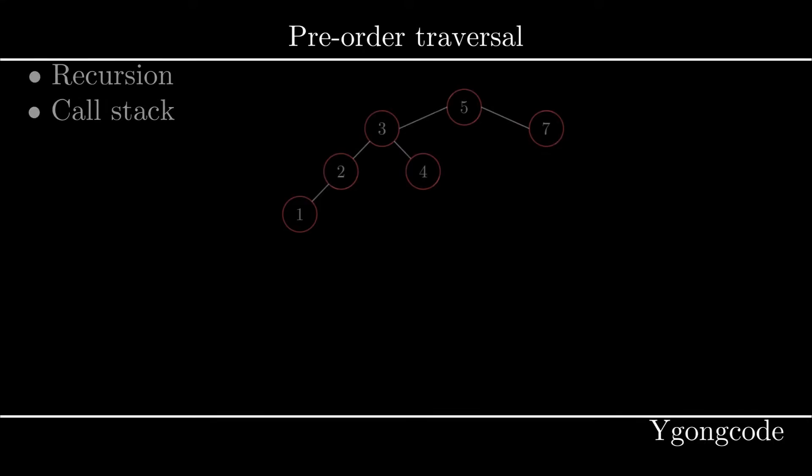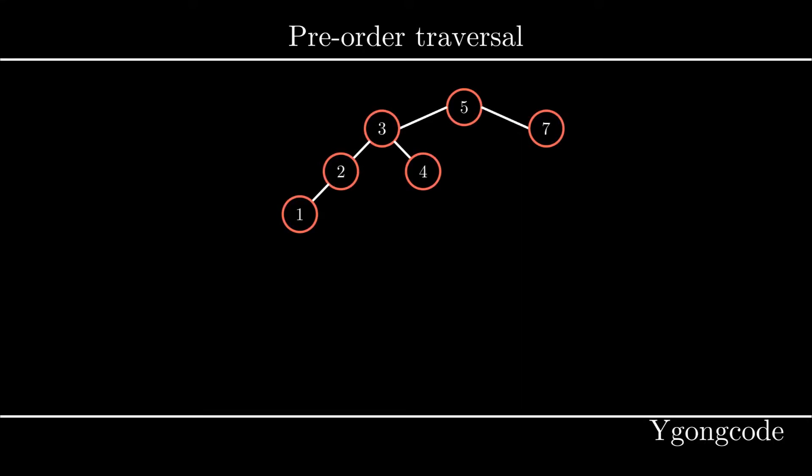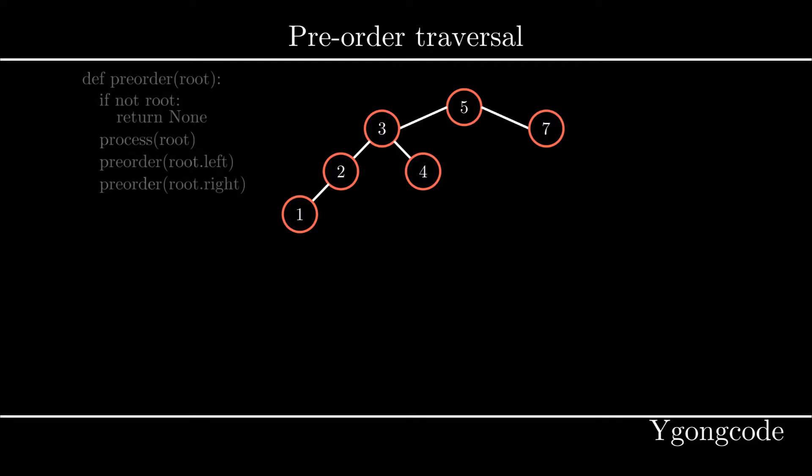Given a binary tree, a pre-order traversal will always process the first node it encounters before it traverses down further. This is very useful for topological ordering. Here's the code for the pre-order traversal.